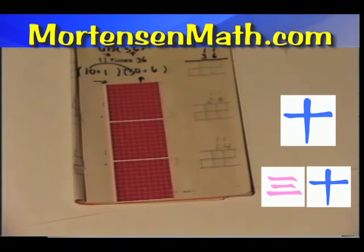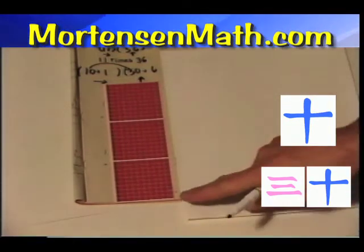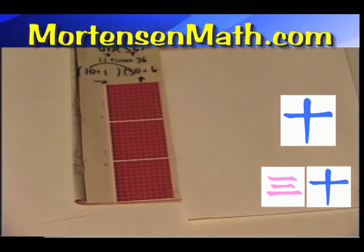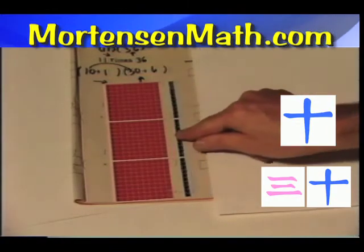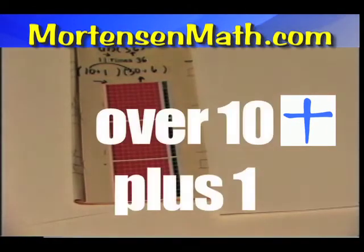We need it to be over ten plus one more. Here we can see our other piece. Over one more would give us this rectangle right here. We will get that rectangle. We are now over ten plus one.